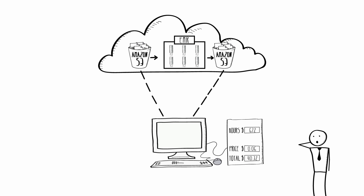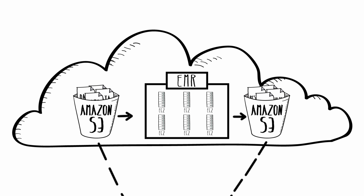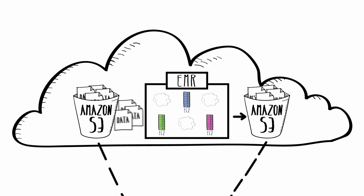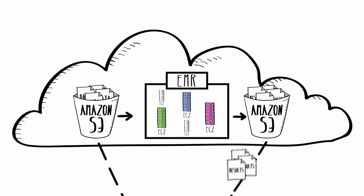Amazon EMR monitors your job, and when it's completed, it shuts down the cluster so you stop paying. Or you can leave the cluster running so it is available for additional processing or querying. You can easily expand or shrink your clusters to handle more or less data, or get answers more quickly.